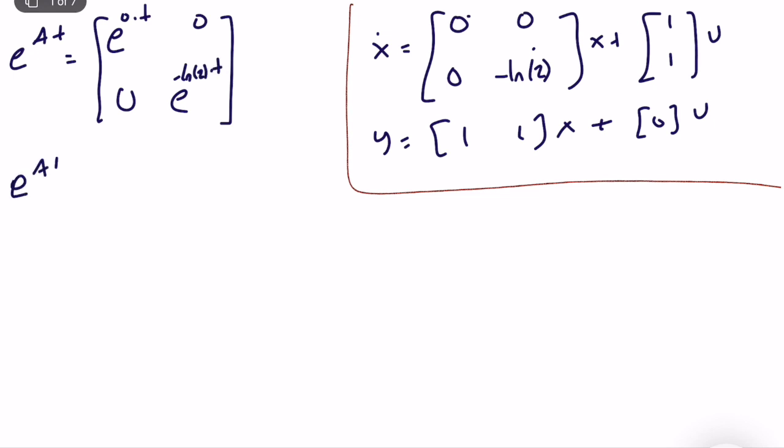This zero times t, e to the power this minus ln(2) times t. Just write it in a simpler way. e to the power A, the state transition matrix is equal to 1, 0, 0. I think this is equal to 0.5 to the power t. It should be true, let's check, it's true. So we computed state transition matrix. So let's also keep here which is very important for our next step.